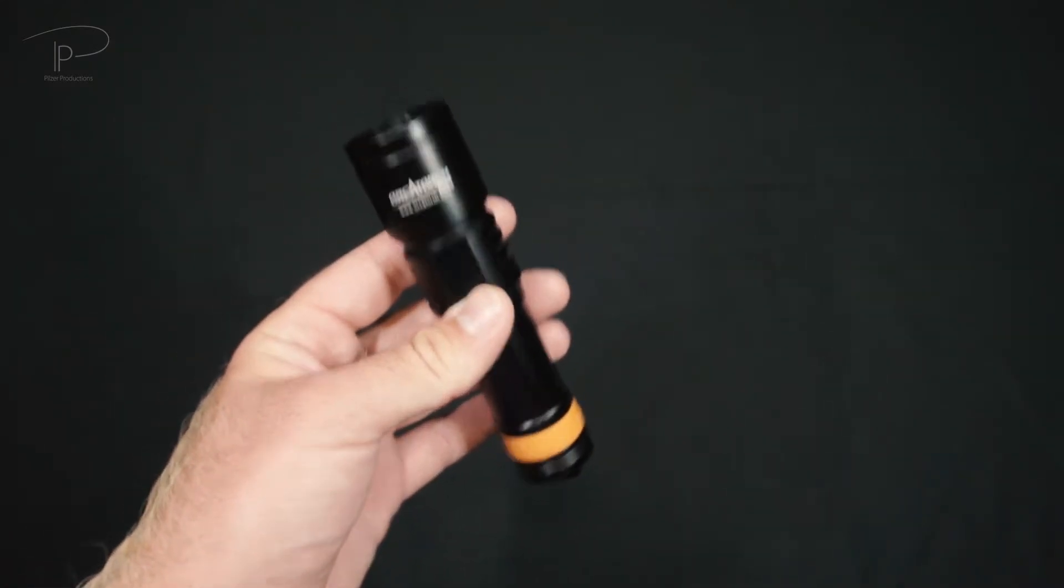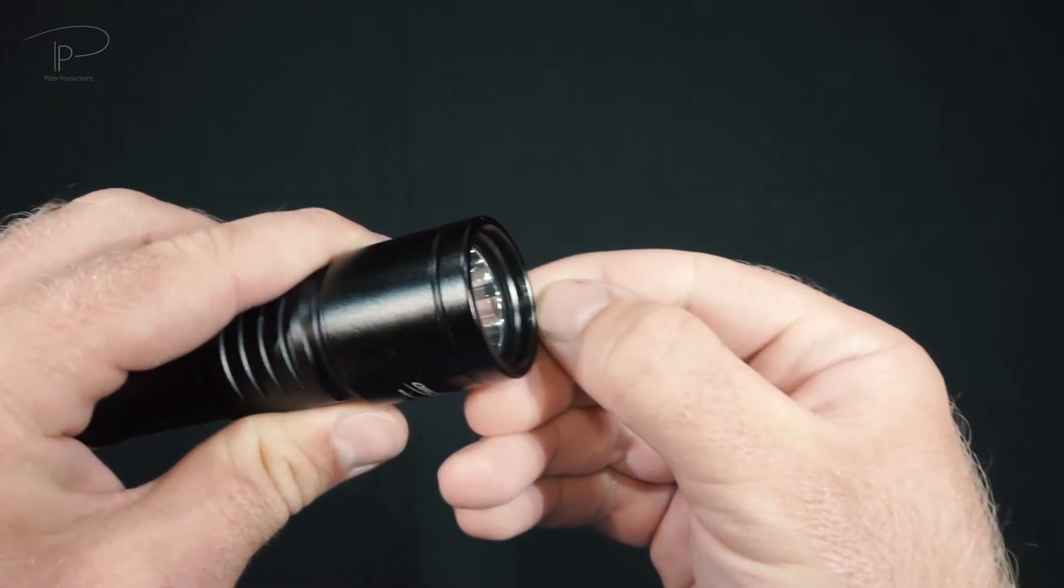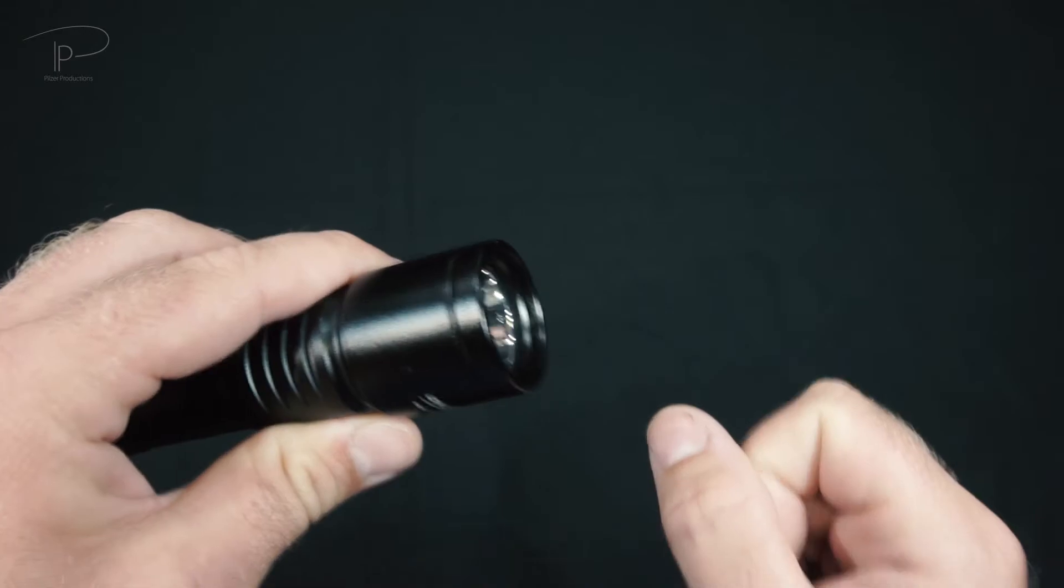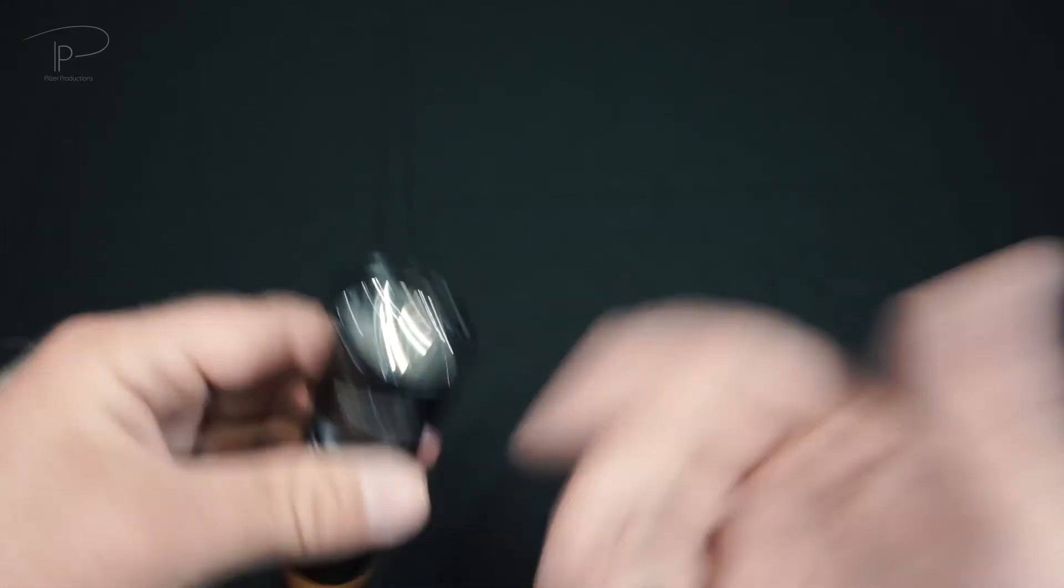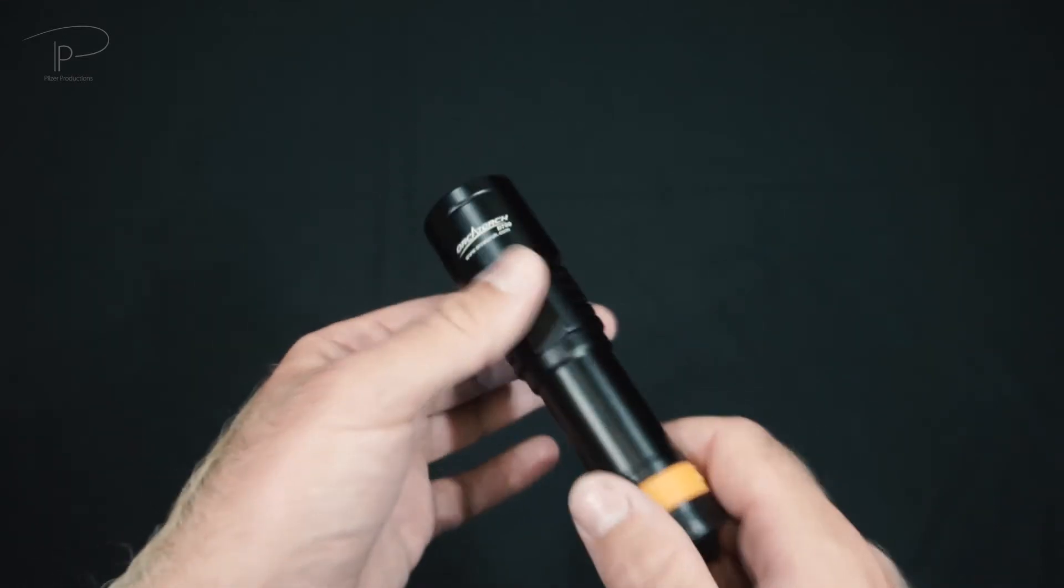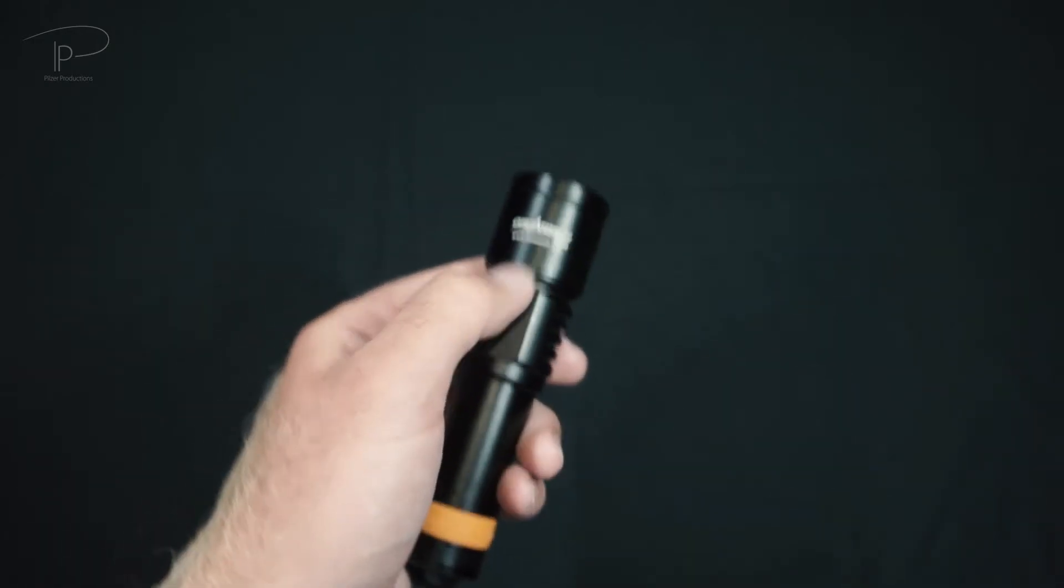There is one thing I missed pointing out and that's why I'm saying it now. In the front part all the way in the front of the light we have a thread. This thread is made for filters so you can use filters with 30.5 millimeter thread on them so you can use colored filters. I personally never needed one, never used one but there are quite a lot of people using them and like this you have the option of adding on an accessory like a filter.